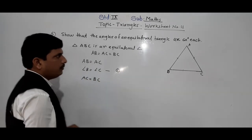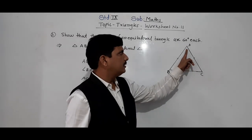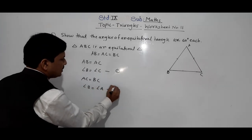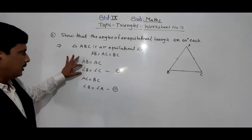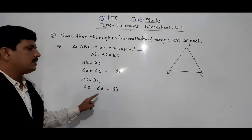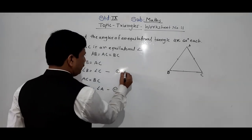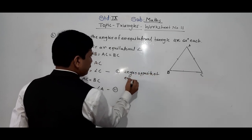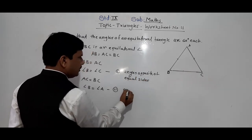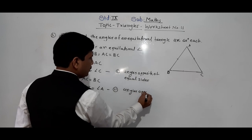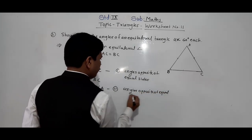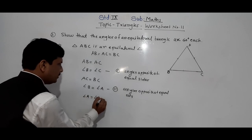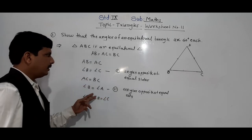First, AB equals AC, so the angles opposite equal sides are equal: angle B equals angle C. Second, AC equals BC, so the angles opposite equal sides are equal: angle B equals angle A. Therefore angle A equals angle B equals angle C — all three angles are equal.